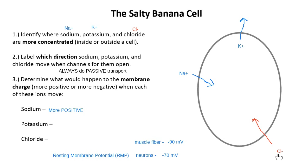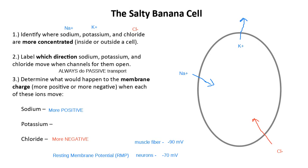Chloride is also going into the cell. Chloride has a negative charge, so what happens when chloride comes into the cell? Chloride brings its negative charge with it, so chloride makes the membrane more negative — it brings more negativity into the cell.